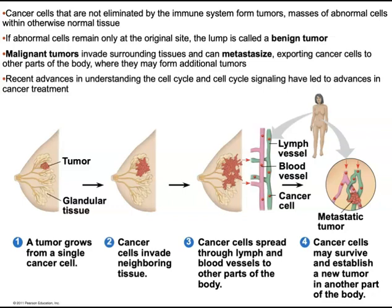In this image, we see a tumor present in mammary gland tissue that began from a single cancer cell. As the cells in the tumor continue to divide due to dysregulation of the cell cycle, the tumor cells invade neighboring tissue. Eventually, the cancer cells spread through lymph and blood vessels to other parts of the body. Recent advances in understanding the cell cycle and cell cycle signaling have led to advances in cancer treatment.